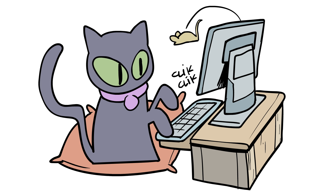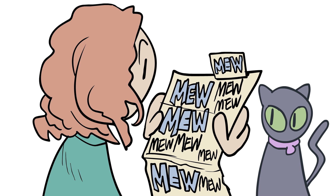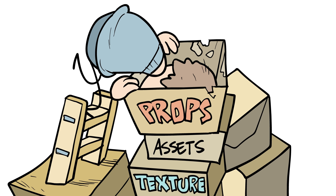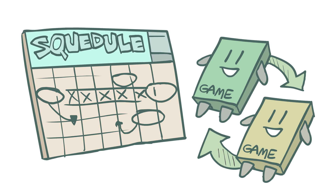Sometimes these things don't immediately occur to people as problems. After all, your designer can find everything just fine in their chaotically arranged level. But as soon as other people start to work on it, they can't. The same is true of poorly commented code or disorganized assets. Organizing everything at this late point could take someone hours, days, or even weeks.